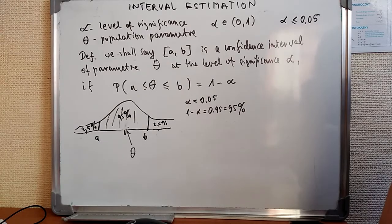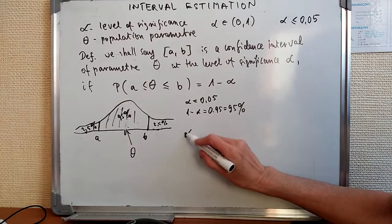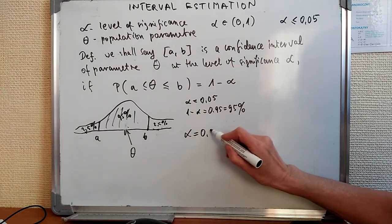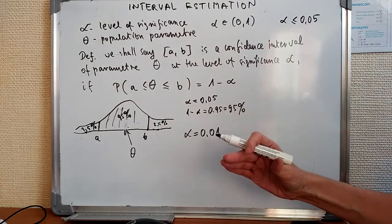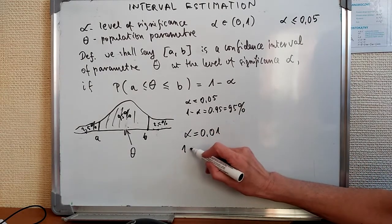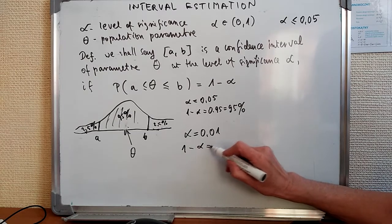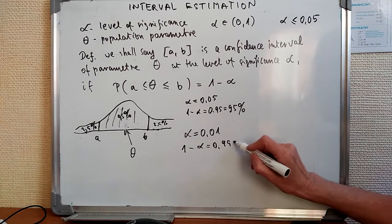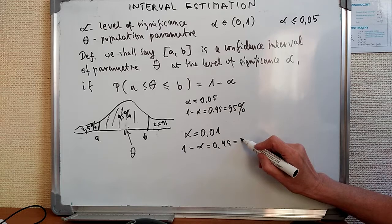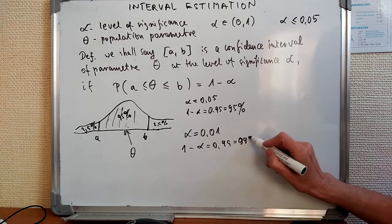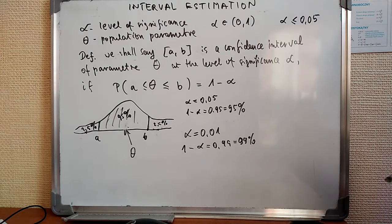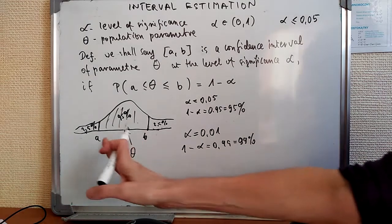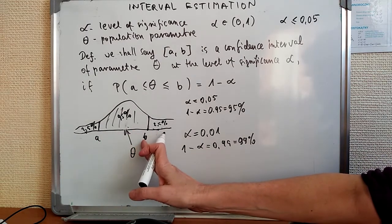If we assumed another level of significance, for example, alpha equals 0.01. So let's make it smaller. What does it mean? We want to be 99% sure. The more certain you want to be, the bigger the spread of a and b will be.